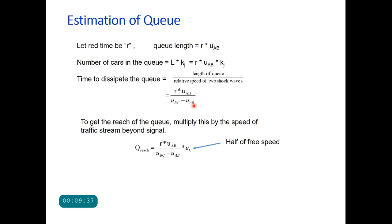One thing we should remember: when the traffic light turns green, the first vehicle starts from the stop line, but it does not mean that the queue dissipates immediately. Vehicles from upstream will continue to join the queue and that will continue until the last vehicle in the queue clears the stop line. To get the reach of the queue, multiply the dissipation time by the speed of the traffic stream beyond the signal, which is u_C — the speed at capacity, equal to half of free speed. This gives the queue reach.